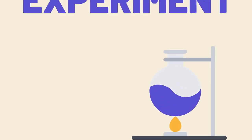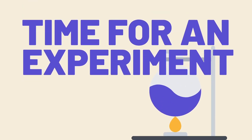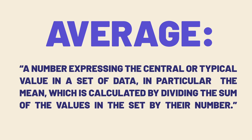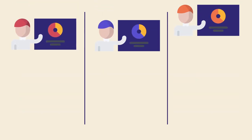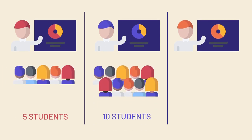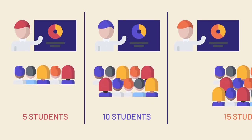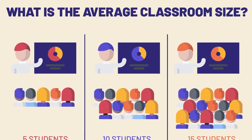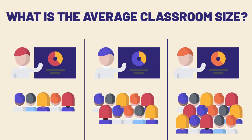Let's try an experiment. We're going to work on a simple average, or mean. There are three classrooms: one with five students, one with 10 students, and another with 15 students. What is the average classroom size across the three classrooms?